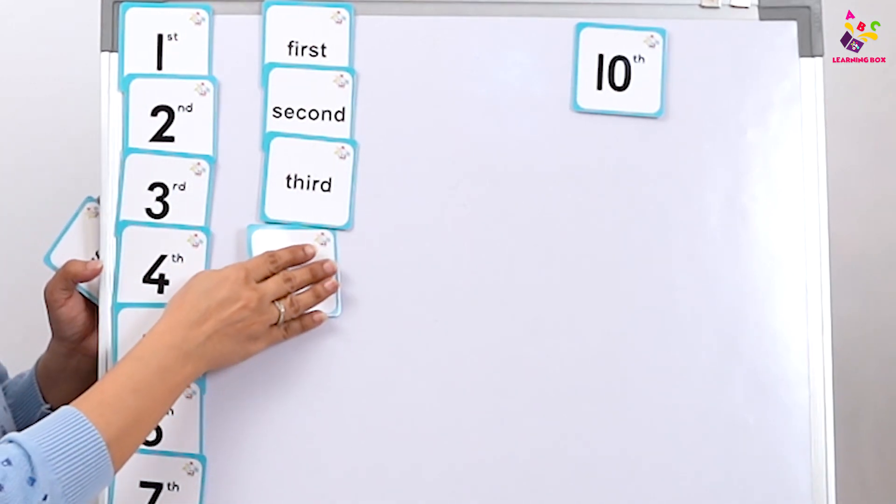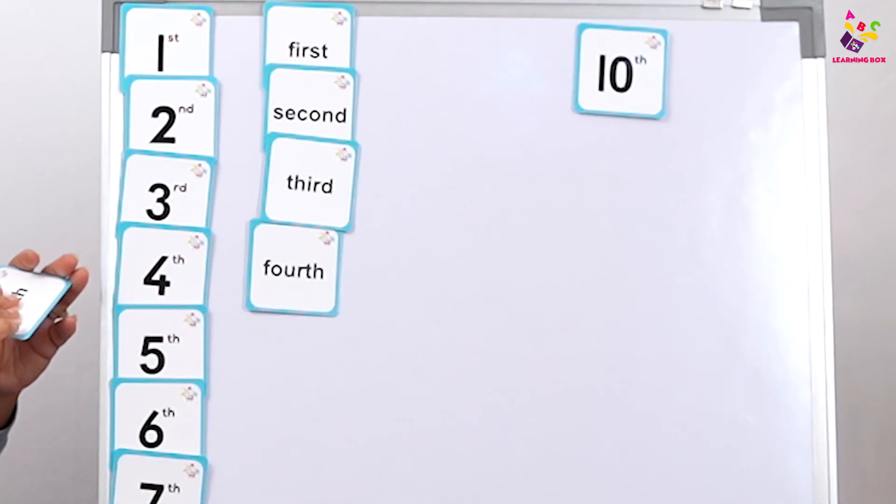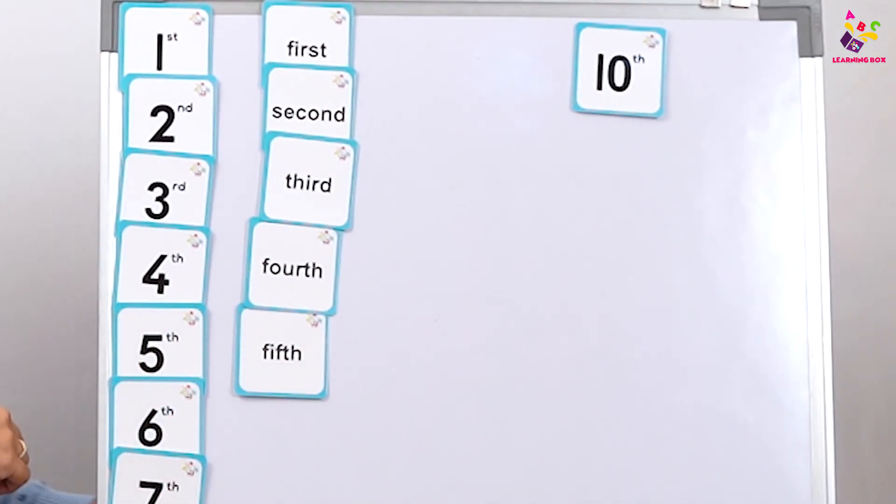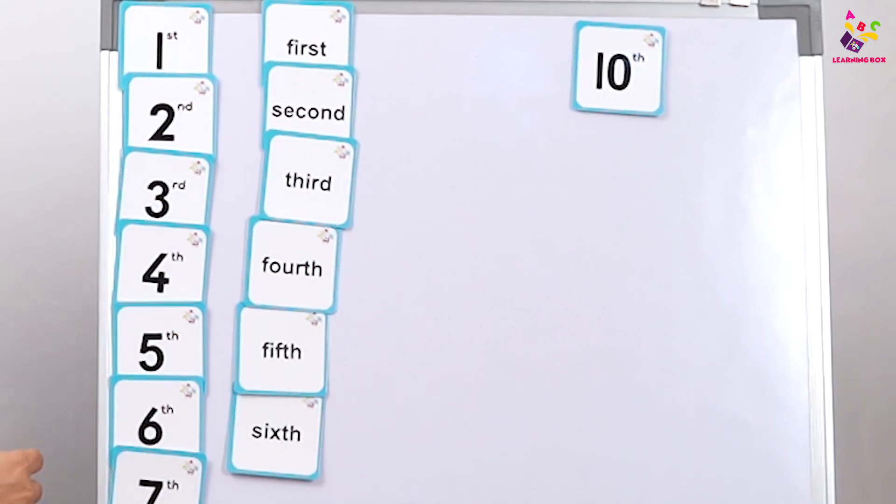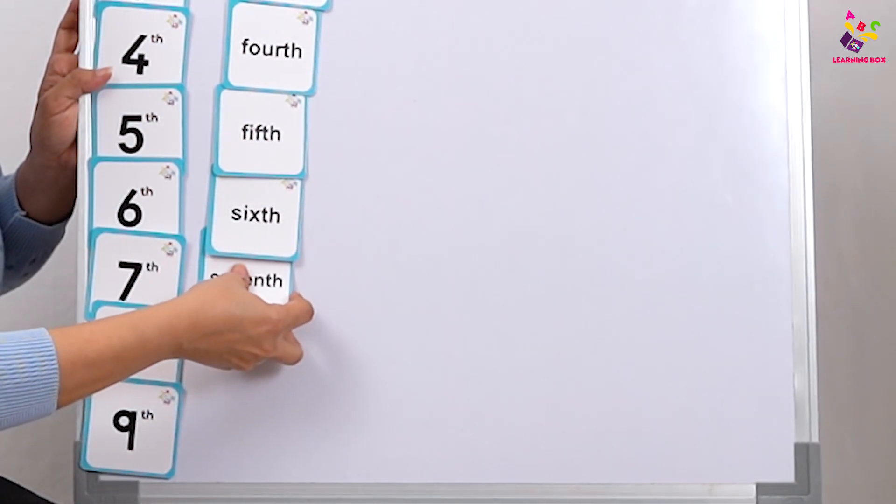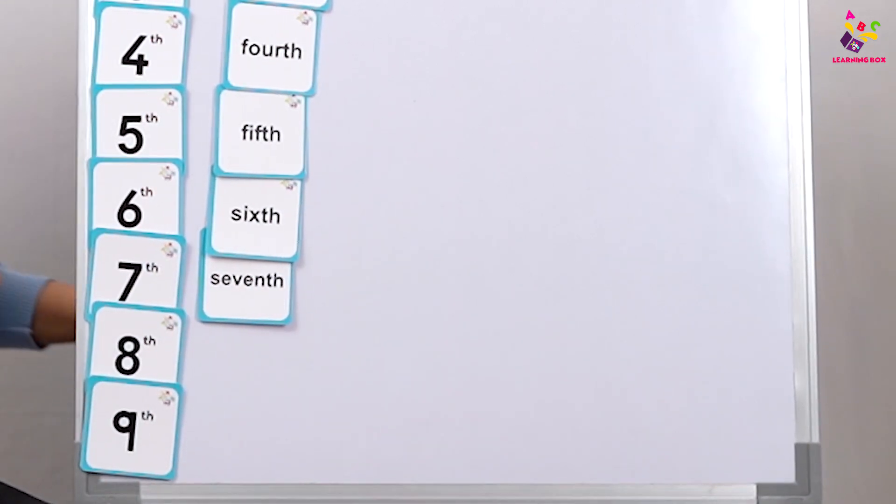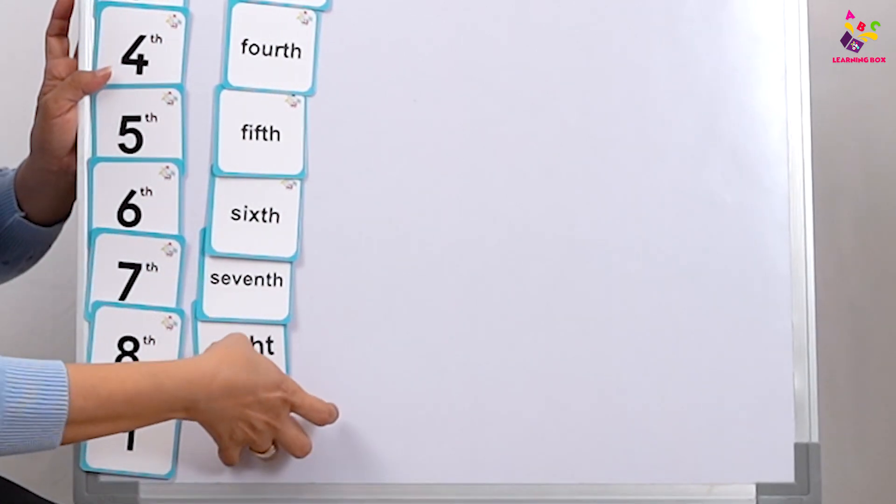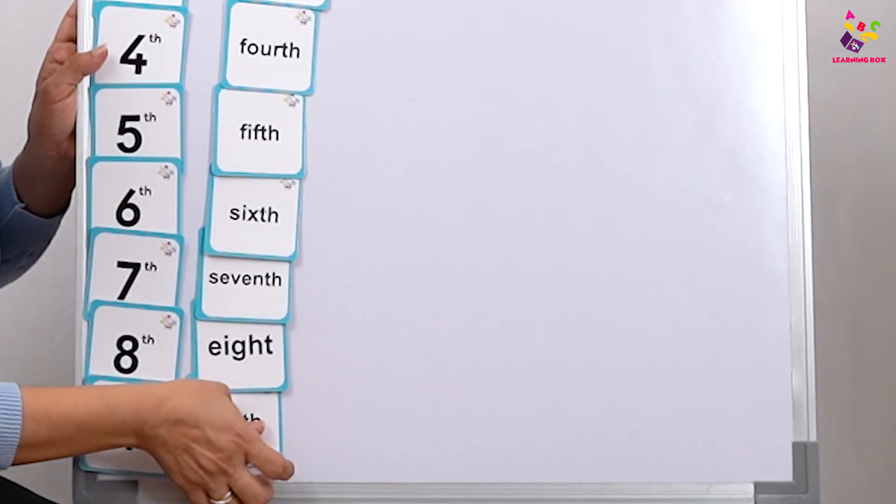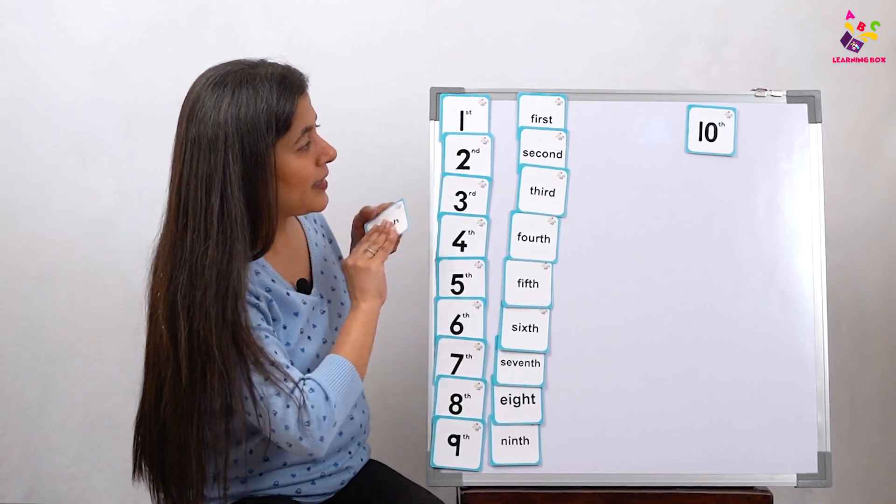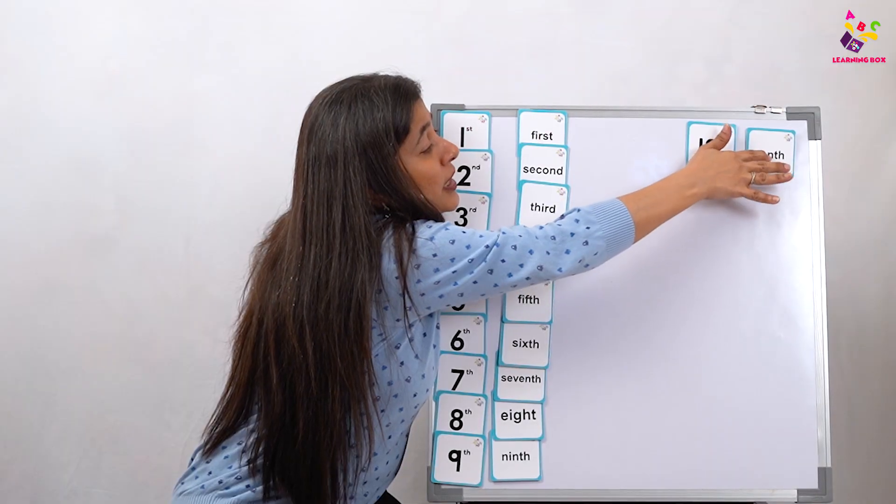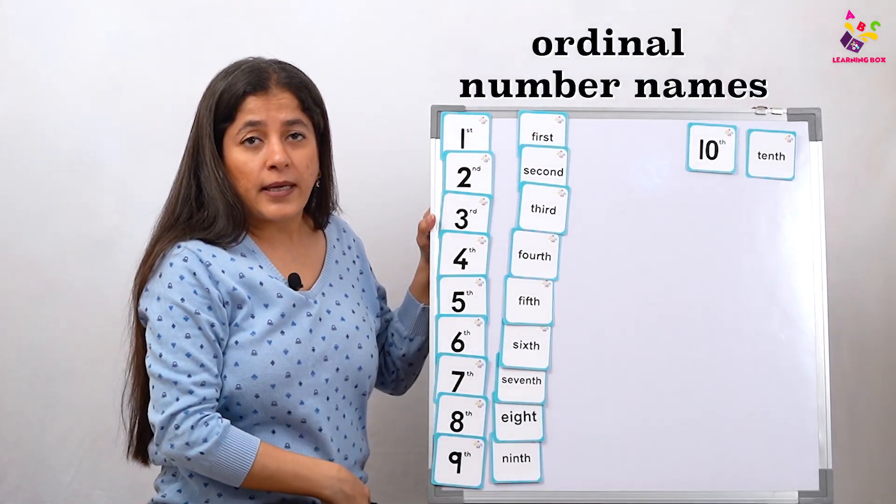Third, fourth, fifth, sixth, seventh, eighth, ninth, and tenth. Yes, so these are your ordinal number names.